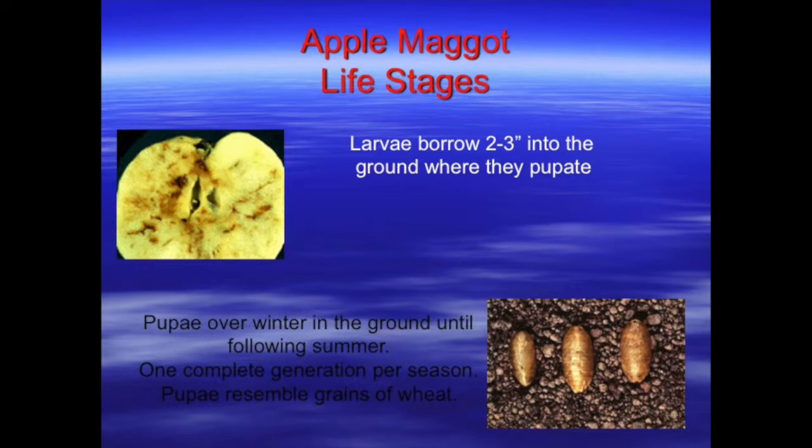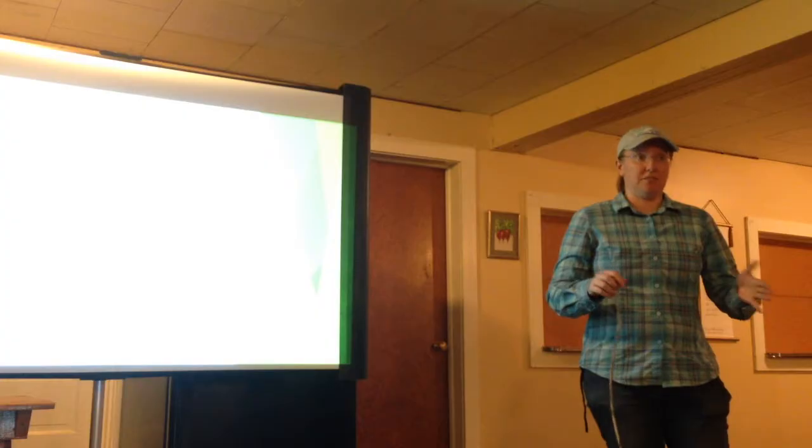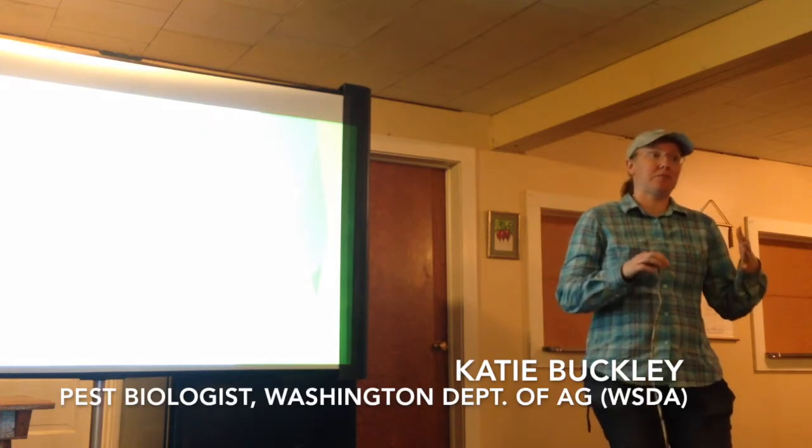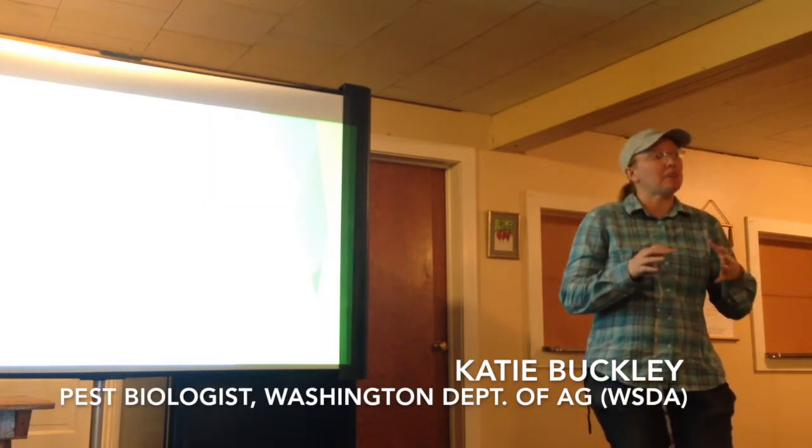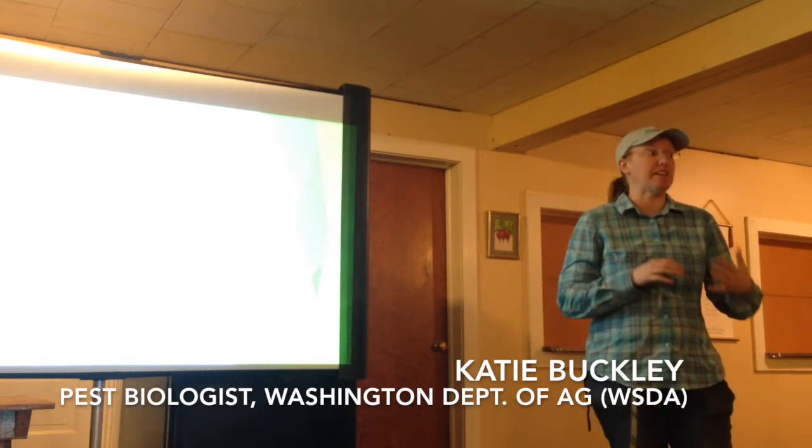Pupa overwinter in the ground until the following summer. And one complete generation per season, the pupa resemble a grain of wheat. Apple maggot is a member of the Rhagoletis genus, which are a bunch of fruit flies. And they are very well known for basically looking the same for the most part, but genetically they can host switch very easily.